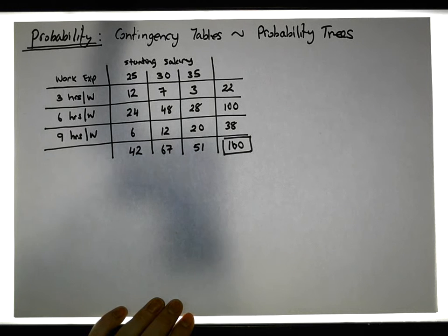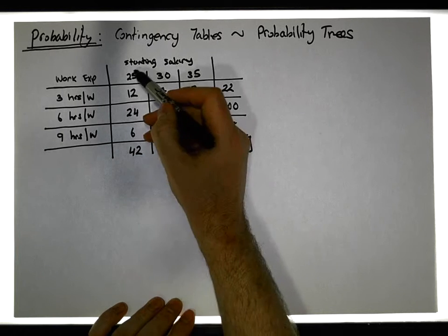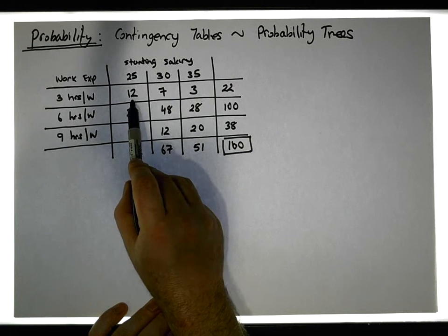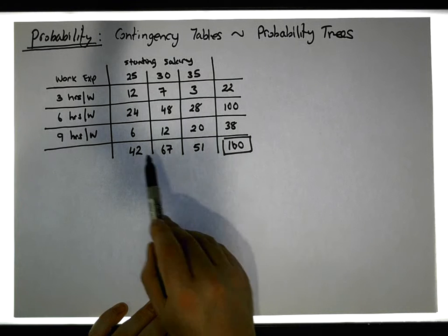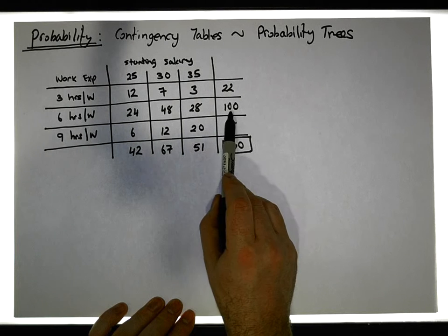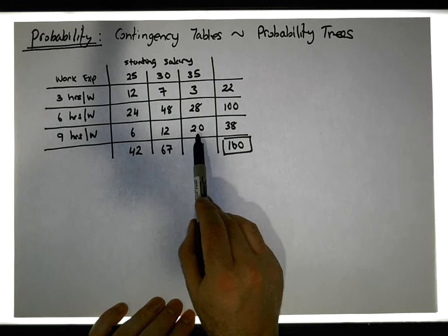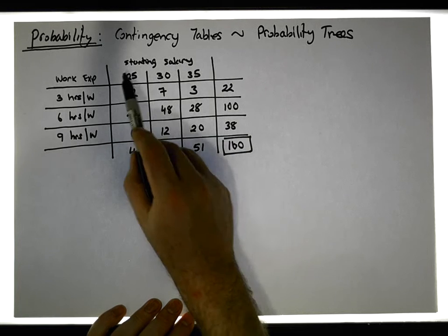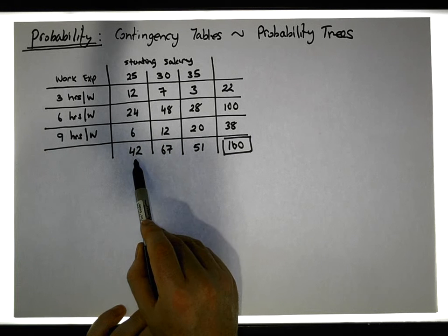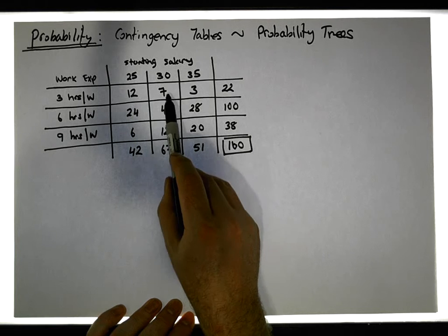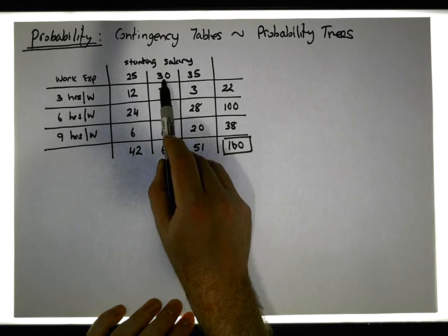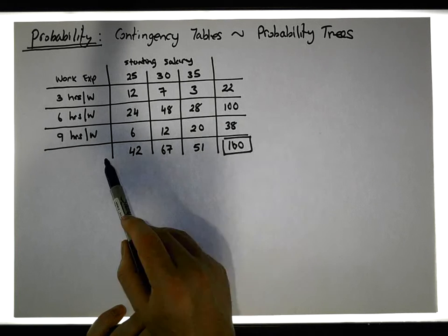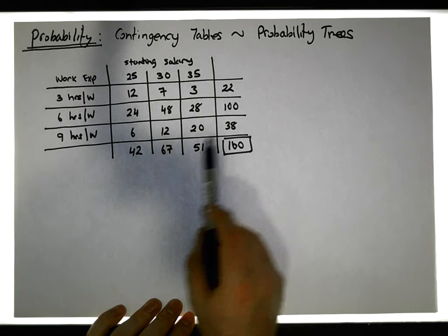From the contingency table we can see that all rows have a total value. The number of students doing three hours per week is 12, 7, and 3, giving a total of 22. Six hours per week is 24, 48, and 28, giving a total of 100. For nine hours: 6, 12, and 20 gives a total of 38 students. For salaries: 42 students were on 25,000 euros, 67 on 30,000 euros, and 51 on 35,000 euros. Summing the margins either way gives us 160 students in total.